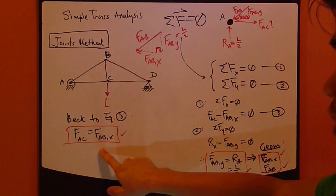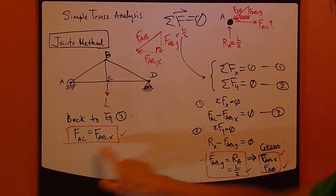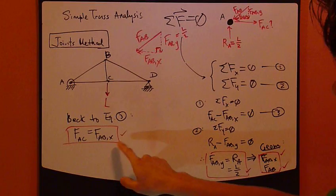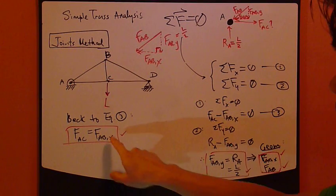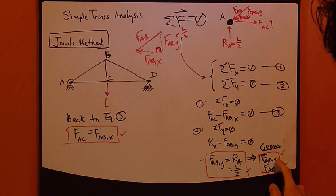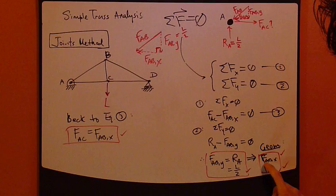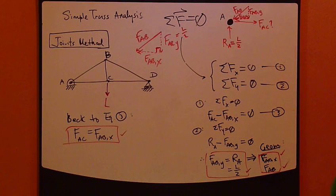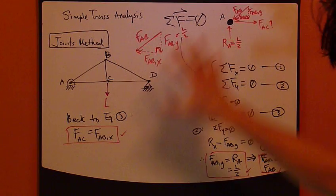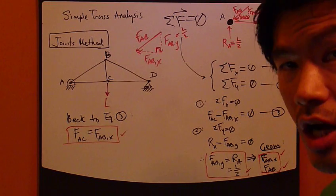And just to continue on, the last equation that you need is back to equation 3. In this equation, the unknown is FAC. So just move FABX to the other side of the equation. And down here, using geometry and this triangle, you've found out what FABX is. So FAC equals FABX.